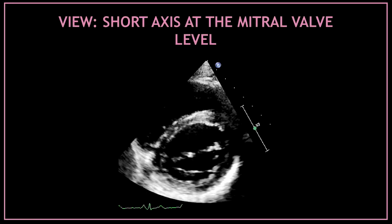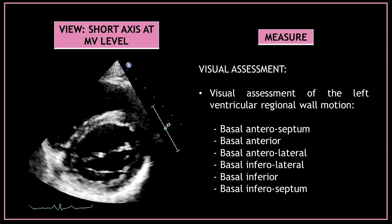Now let's move to the parasternal short axis view at the mitral valve level. After obtaining this view, do a visual assessment of the left ventricular regional wall motion. At this level we can only see basal segments of the left ventricle, so assess for any regional wall motion abnormalities of the basal anteroseptal, basal anterior, basal anterolateral, basal inferolateral, basal inferior, and basal inferoseptal segments.